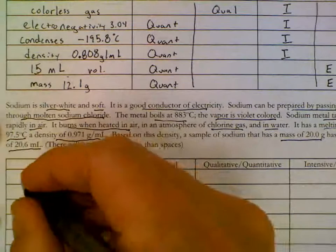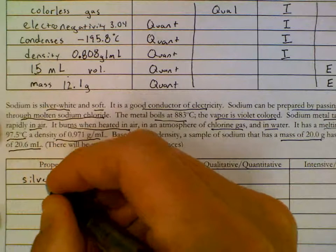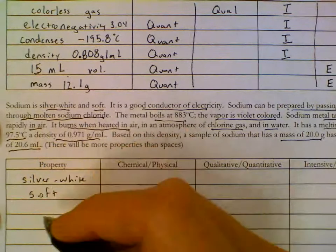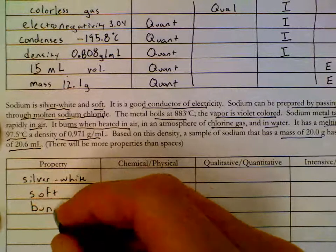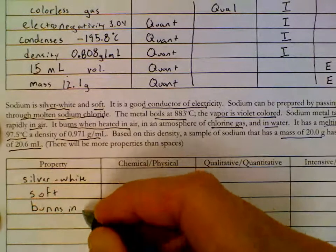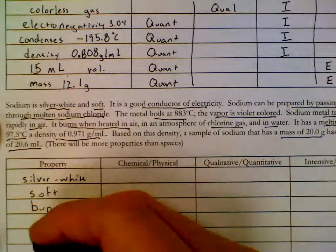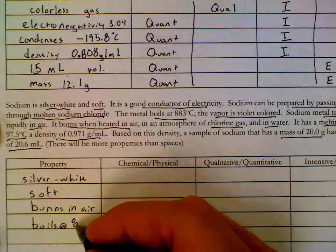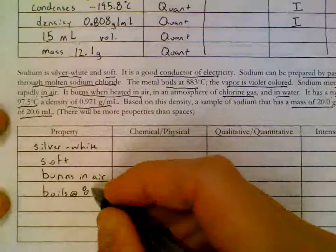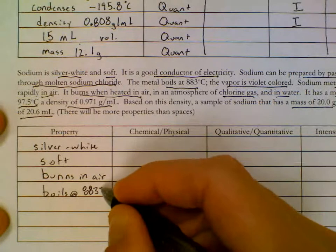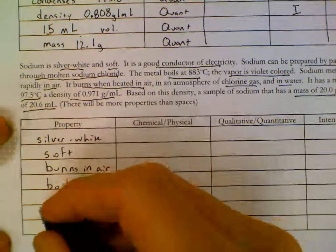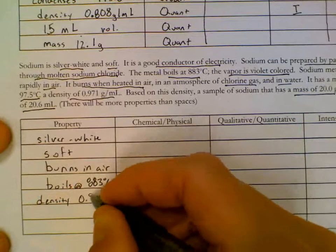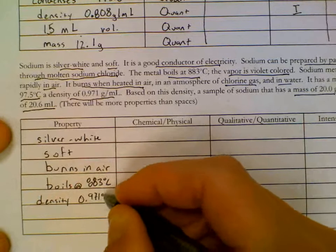Silver white. Soft. Burns in air. And we also add boils at 883. Density of 0.97 grams per ml.